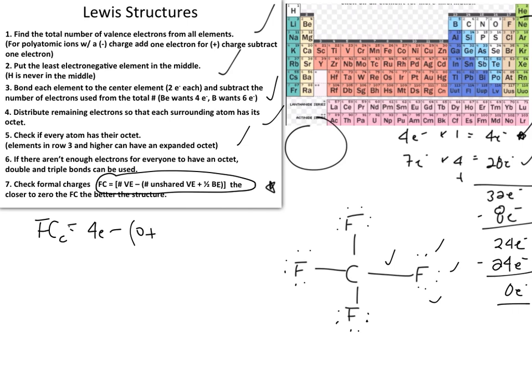Two times four gives eight bonded electrons total. Half of eight is four. So the formal charge on carbon is four minus zero minus four, which equals zero. Carbon has a formal charge of zero, noted with parentheses in the structure.